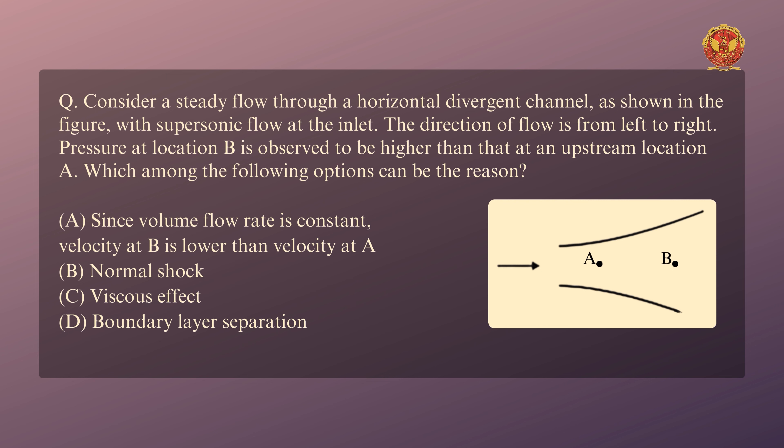Region ke sath mein humein yahan pe batana hai kaun sa vikalp sahi rahega. To yahan pe do locations hain, left to right matlab yahan pe left side pe upstream section hai, aur right side pe downstream section hai. To jaisa ki hum diagram mein dekh pa rahe hain, ki yahan pe char vikalp diye hue hain, us char vikalp ke hisab se humein ek select karna hai.